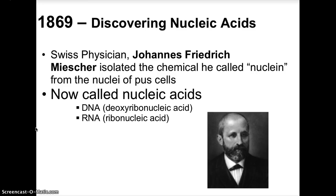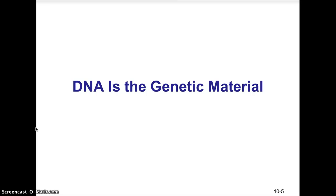That race began in 1869 with the discovery of molecules known as nucleic acids. Swiss physician Johannes Frederick Meissner isolated a chemical he called nucleine from the nuclei of pus cells. Those nucleins are now called DNA — deoxyribonucleic acid — and the other nucleic acid is RNA, ribonucleic acid. Once we understood DNA and RNA, we wanted to know which molecule was responsible for inheritance. Today we know that molecule is DNA.